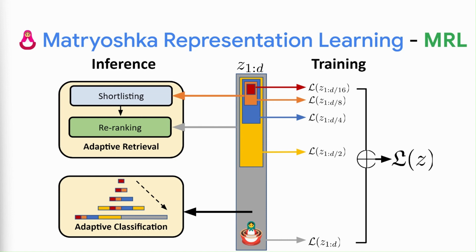Once the training is done, we can take the first K dimensions to form our required low-dimensional embeddings, and these low-dimensional embeddings are as accurate as explicitly trained low-dimensional counterparts. Finally, Matryoshka representations enable adaptive deployment for accurate large-scale classification and retrieval based on task and resource constraints.